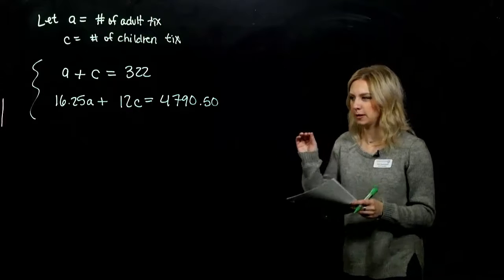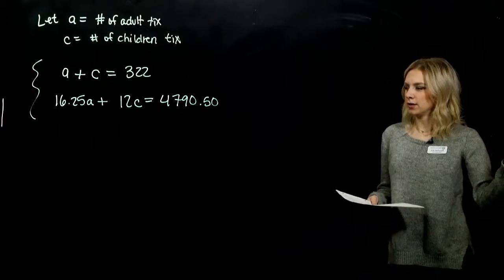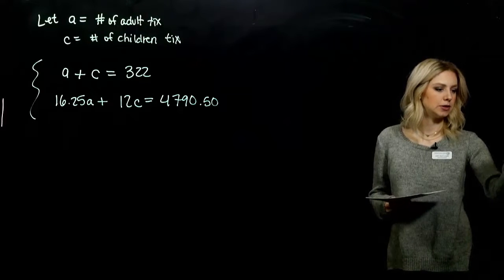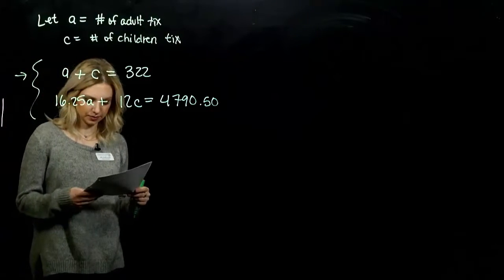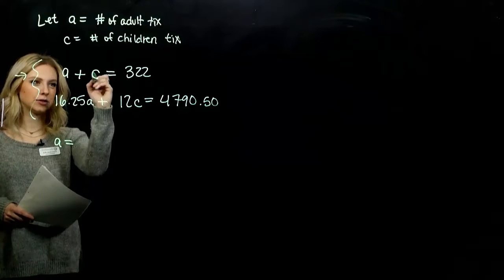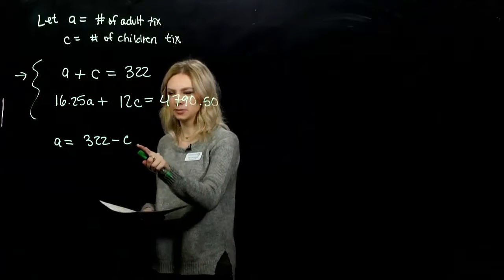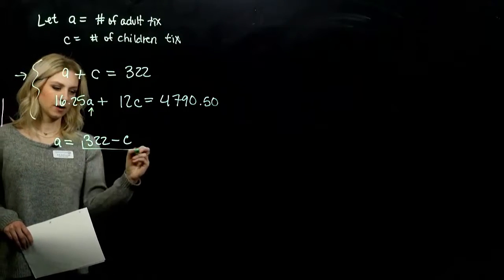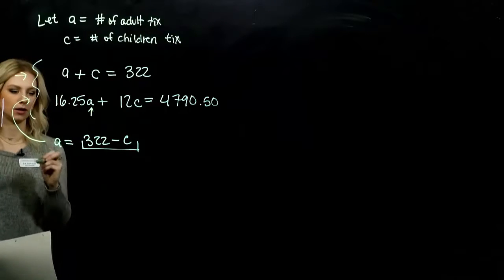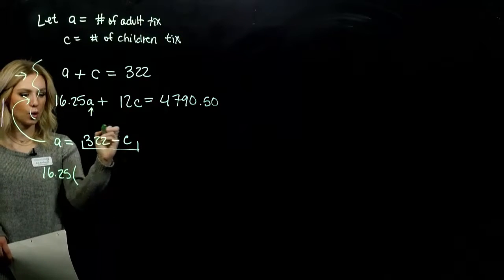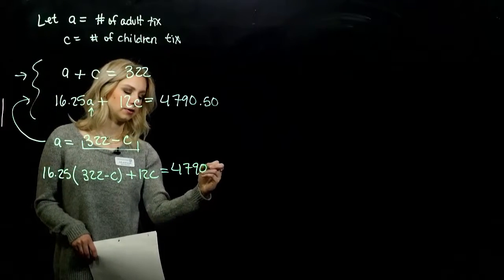So we've got our system based off of number of people that came and the price altogether. To solve, I want to use the substitution method. I'm going to take that first line and solve it for A. So A equals 322 minus C. I can substitute in wherever I see an A, that entire quantity 322 minus C. So substituting: 16.25 times (322 - C) plus 12C equals 4,790.50.